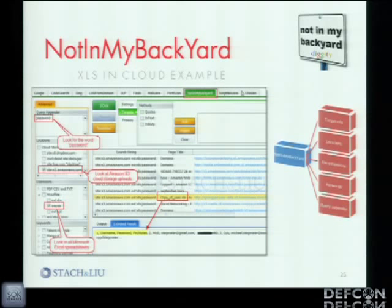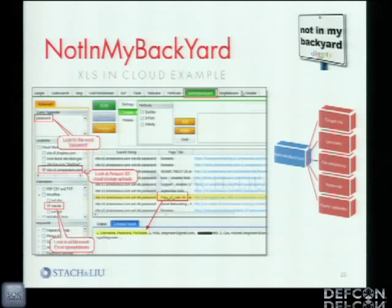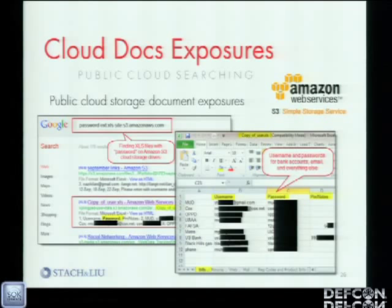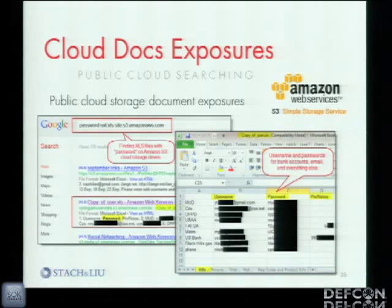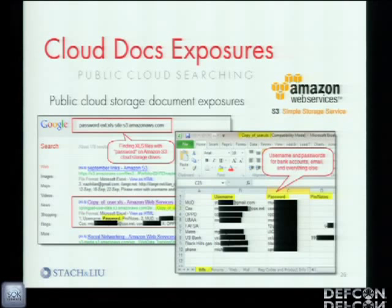Another example — this time looking in cloud storage, specifically at Excel spreadsheets in Amazon S3 cloud storage. I added the query 'password' and clicked go. It found a file called 'copy of user.xls.' Looking at what it looks like through the web interface — this guy had basically all of his bank accounts, all of his bills, other services, his tax information, account info, investments, FAFSA, healthcare, his ATM PIN — you name it, all in one spreadsheet. This was just one guy — if you're also in the room, I apologize, I did black out the information.